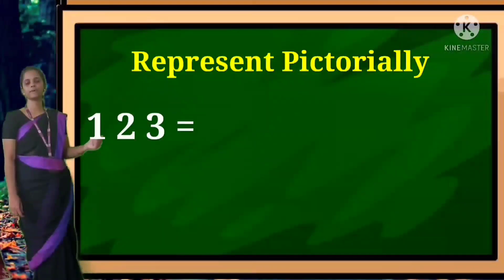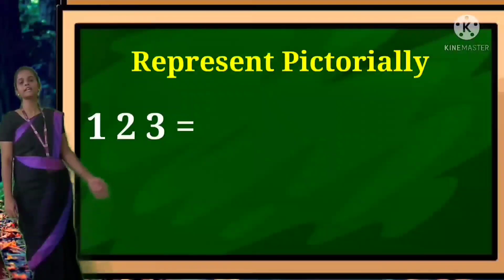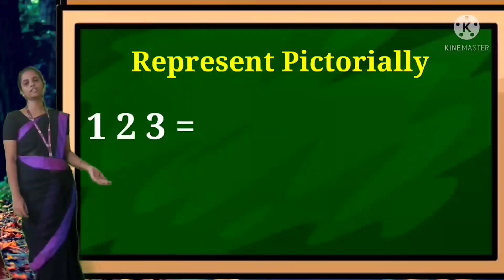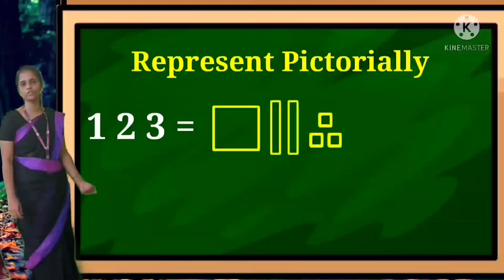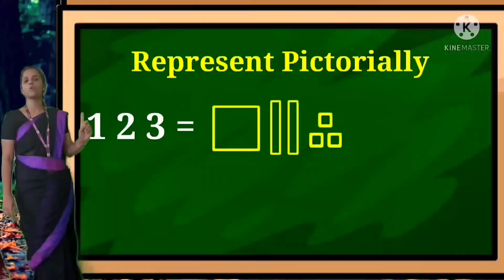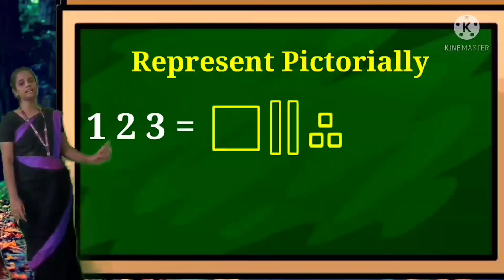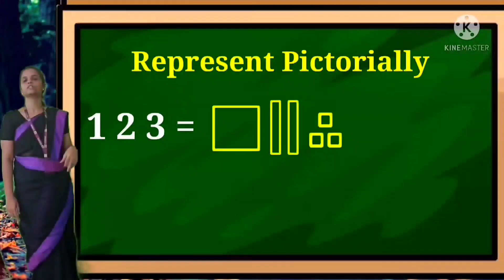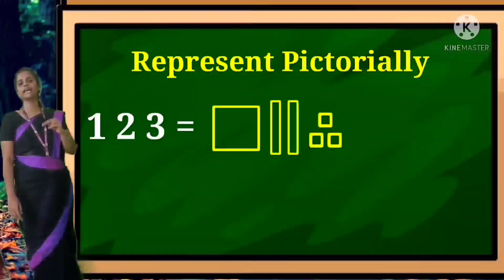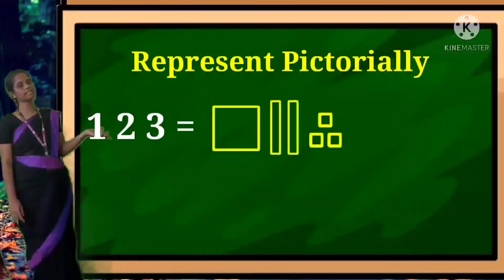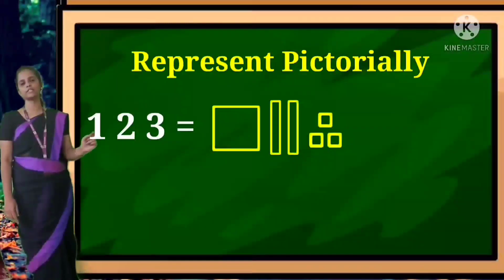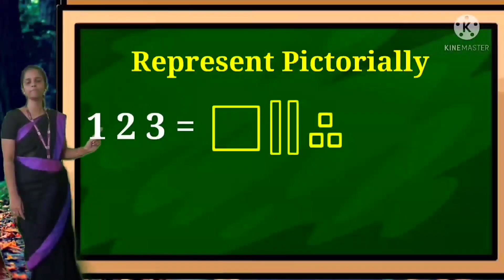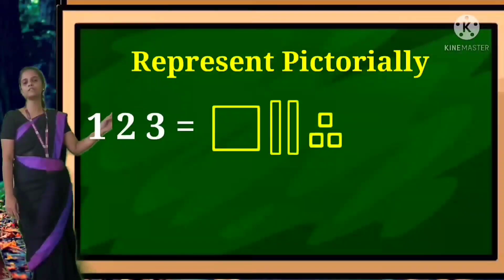Next: one hundred and twenty-three. One hundred — draw one big box. Tens place is two — draw two thin strip boxes. Three is in ones place — draw three small boxes. So draw one big box, two thin strip boxes, and three small boxes.